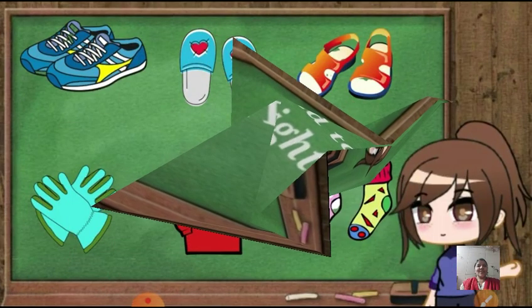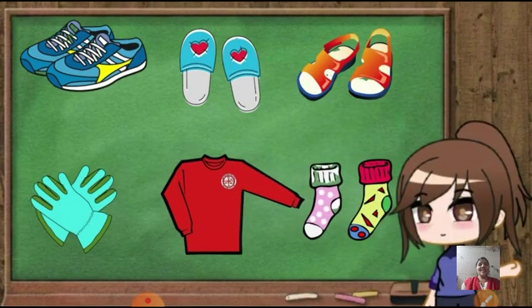Now look at this picture. Here we can see a pair of shoes, pair of sandals, pair of gloves, sweater and socks. Observe these objects and tell me what we can see here. When we look at the pair of shoes, we can see two shoes. So when we have to wear sandals, shoes, socks, gloves, we should know the direction left and right.